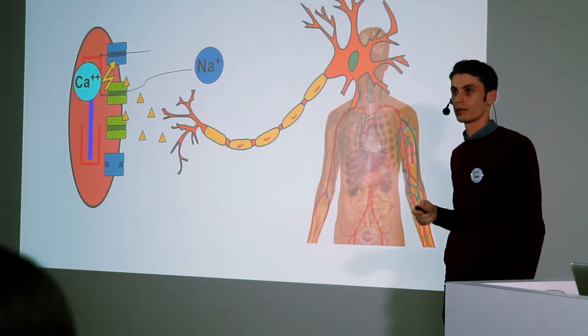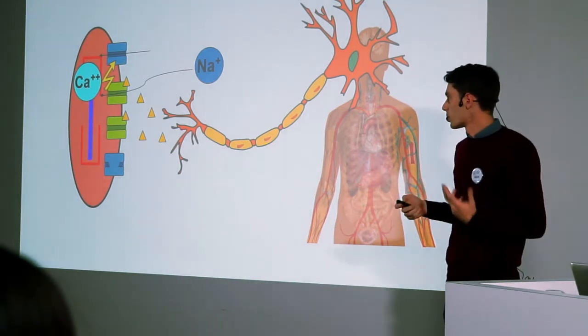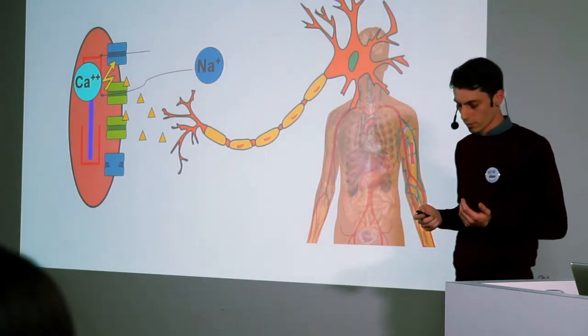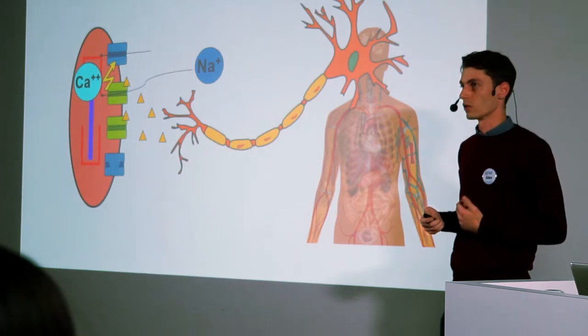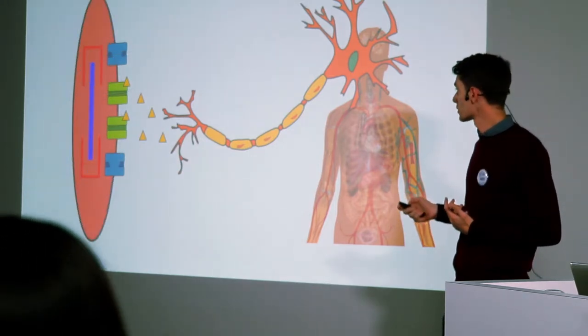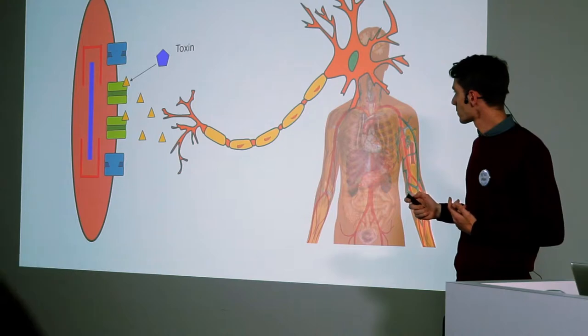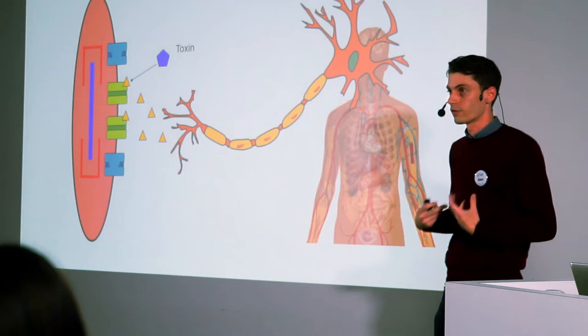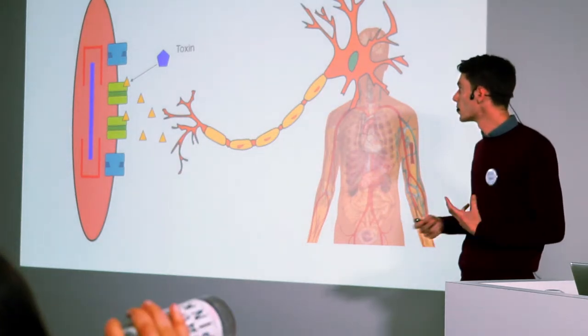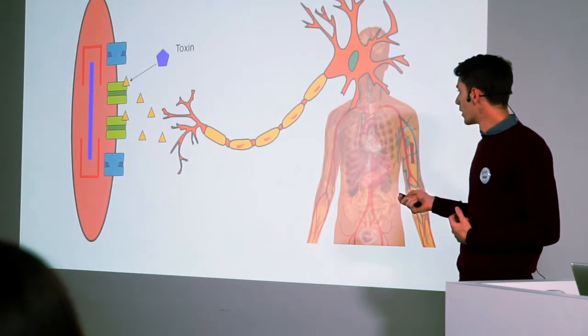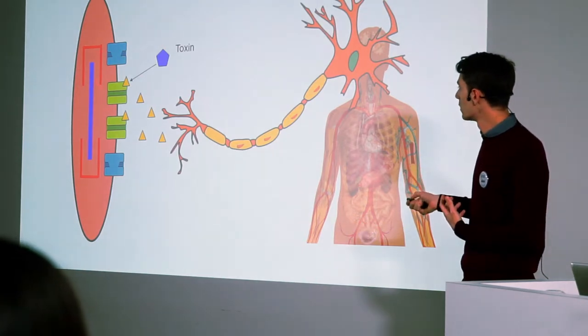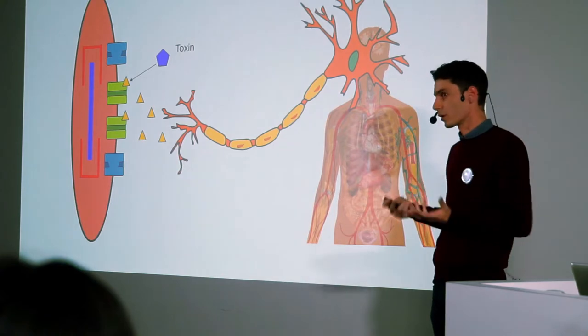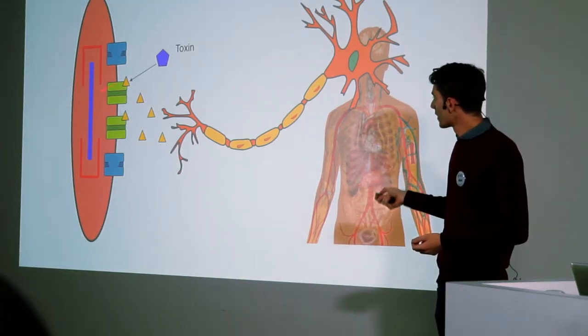But there are substances out there that can interfere with the function of our ion channels and disrupt our physiological processes like moving our muscles. These substances tend to be things that we call drugs or toxins. Toxins, for example, are just natural poisons—things that you find in nature that disrupt your physiology in some way, usually harming you. Some toxins work by binding to your ion channels and interfering with how they work.